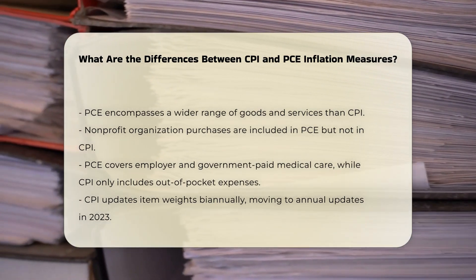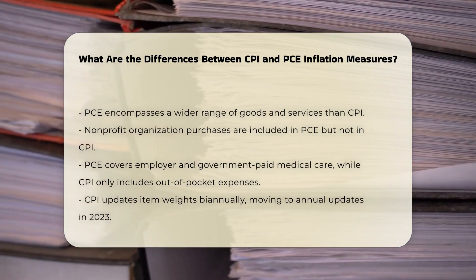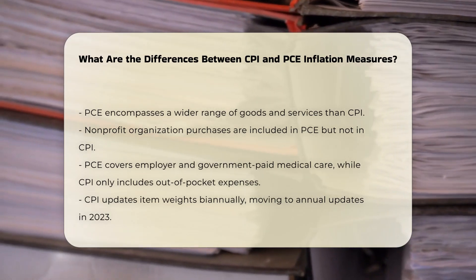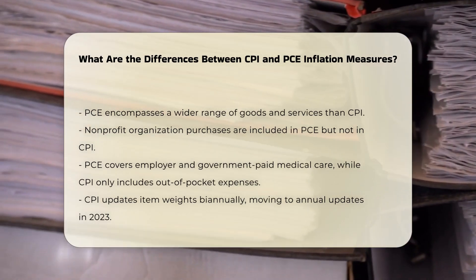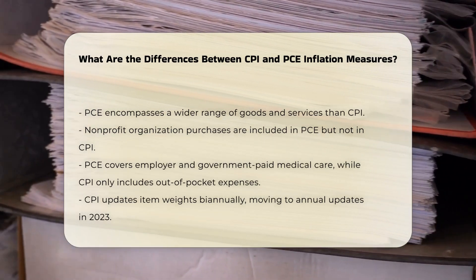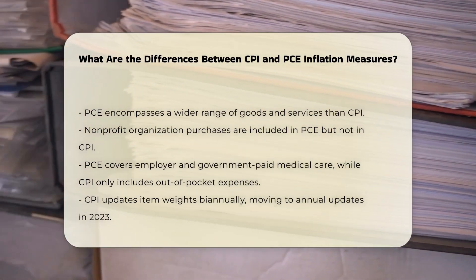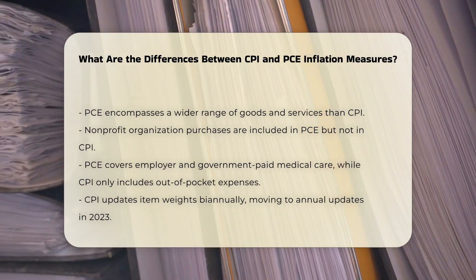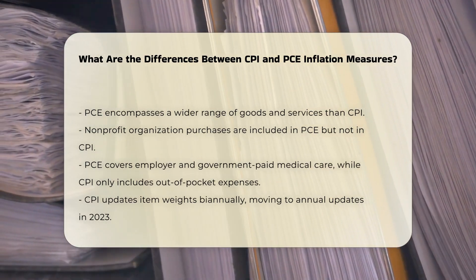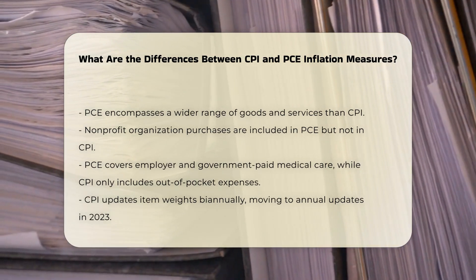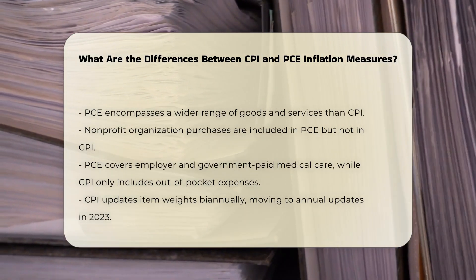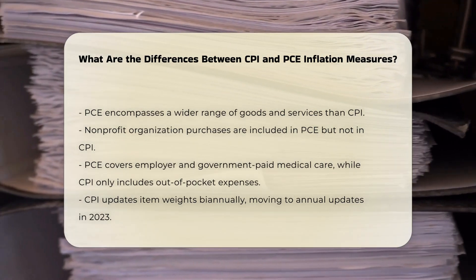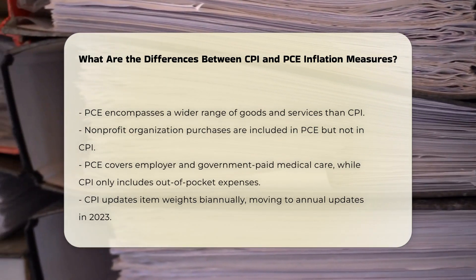This frequent updating in the PCE allows it to better capture consumer substitution effects, where consumers switch to cheaper products due to relative price differences. The weighting of components also varies between the two indices. For example, housing makes up approximately 33% of the CPI basket, but only 15% of the PCE basket.